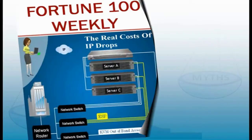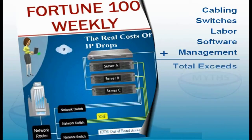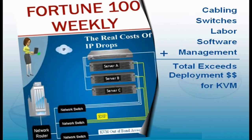There are Fortune 100 IT companies that place the cost of a drop at more than $600. This cost includes just cabling, switches, and labor, but doesn't factor in software and management overhead. The total ESP costs can match or even exceed costs for deploying and using a KVM switch network.